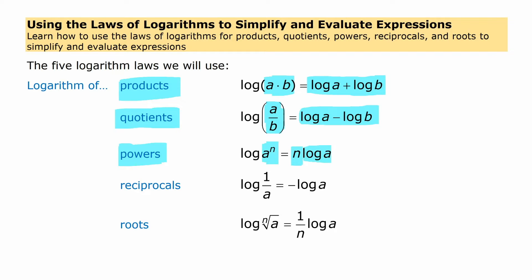We also have two extra laws that are special cases of the power law, for reciprocals and roots. The logarithm of a reciprocal is the negative logarithm of that number — logarithms of reciprocals are opposite signs. And the logarithm of the nth root of a is the same as one over n times the logarithm of a. So let's get to using them.